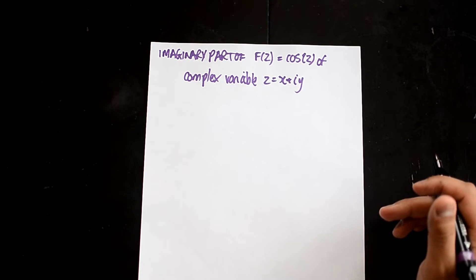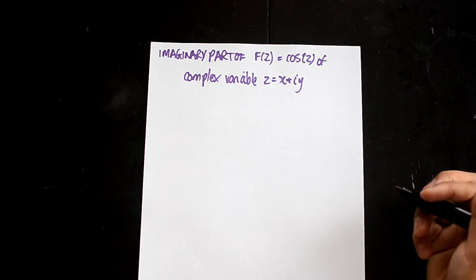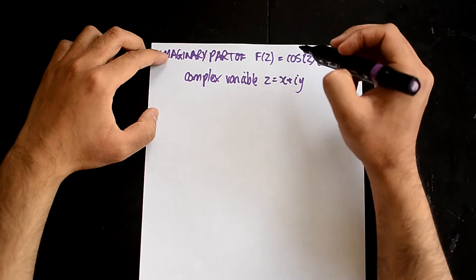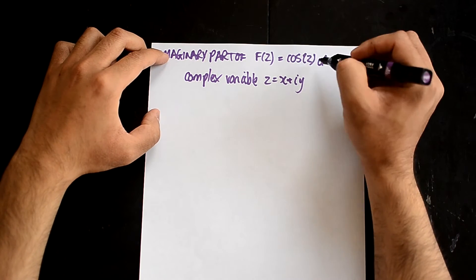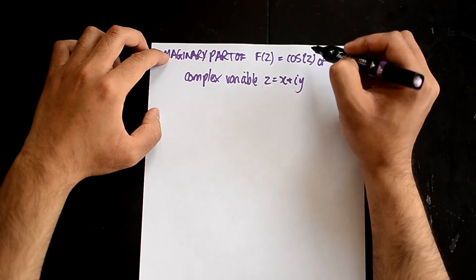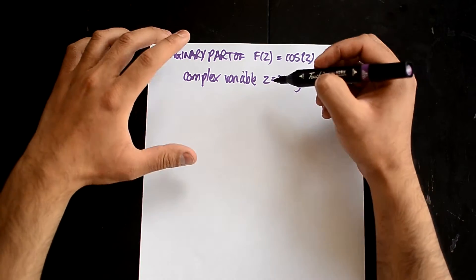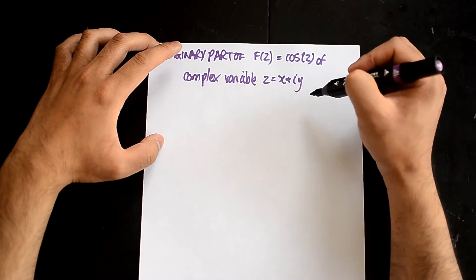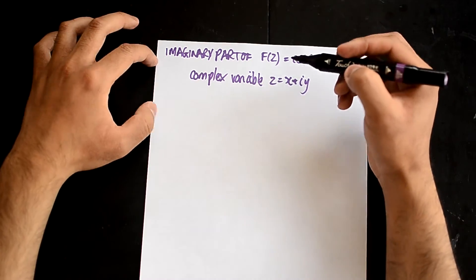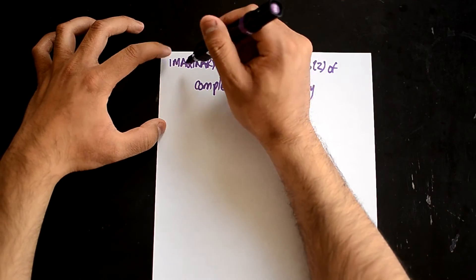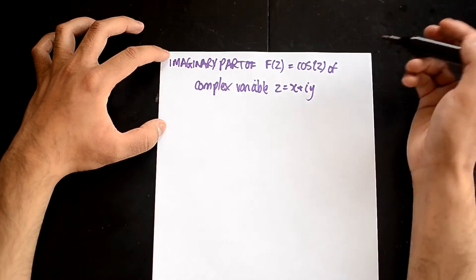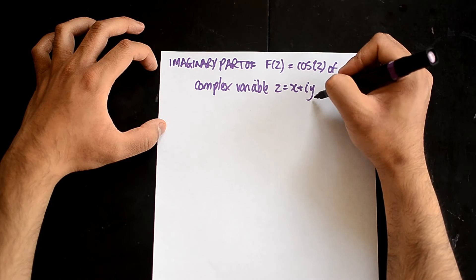There are a bunch of formulas for this that you need to remember, and you're going to be manipulating cos z into getting it into this form. For this question, it's asking you to find the imaginary part, which is this.